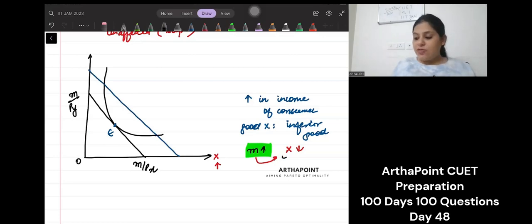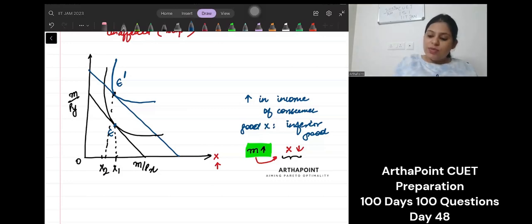What is going to happen to the demand of good X? It should decrease. If demand of good X is initially here at X1, demand of good X will decrease to X2. Demand of good X will decrease maybe to X2. This is point X2. This will be your new point. When I draw an IC through it, this is my second IC. This is my new equilibrium E dash.